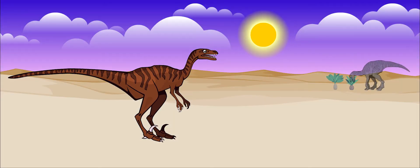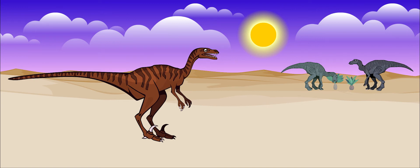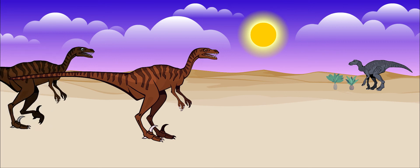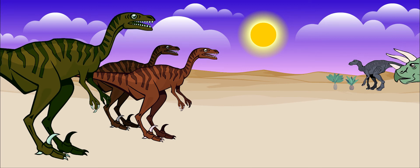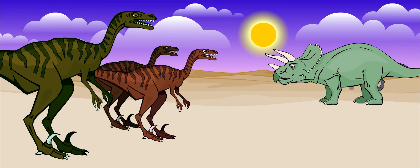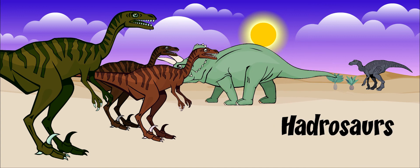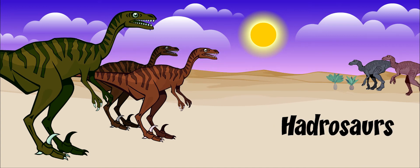Velociraptor probably ate many different creatures for food, including dinosaurs that were much larger than themselves. Velociraptor most likely hunted in groups, especially if it were hunting very large prey. It mainly ate plant-eating dinosaurs, such as the hadrosaurs or duck-billed dinosaurs.